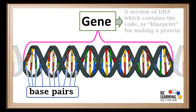Notice the occurring pairs in the center of the molecule. These are called base pairs. Our diagram represents a gene. However, in reality, genes are very much longer than the diagram suggests. A human gene can contain anywhere from a few hundred to two million base pairs.